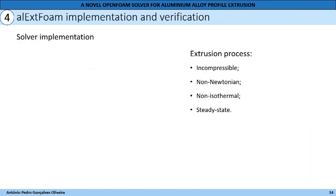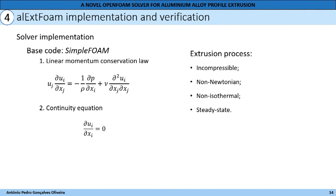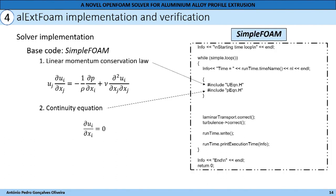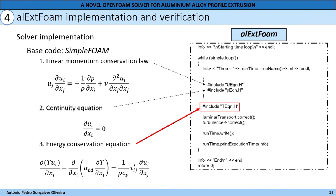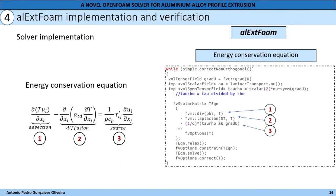Now, for the OpenFOAM implementation. We start with the solver implementation. We know that the extrusion process is incompressible, non-Newtonian, non-isothermal, and steady state. We start with simpleFoam, which already solves the linear momentum conservation law and continuity equation, and we add the energy conservation equation. The energy equation script has a first term which is the advection term, a second term which is the diffusion term, and a third term which is the source term, or viscous dissipation.